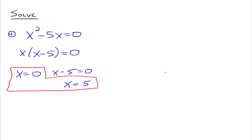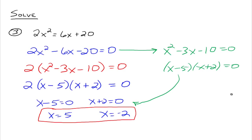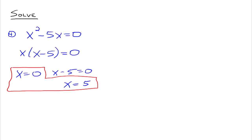However, consider a case where the greatest common factor is x — a variable. For example, x² - 5x = 0 factors as x(x - 5) = 0. Setting each factor equal to zero gives x = 0 and x - 5 = 0, so x = 0 and x = 5. My general rule of thumb is to never divide by the variable you're trying to solve for. It's too easy to make a mistake and lose a solution. Instead, factor it out and set each factor equal to zero.